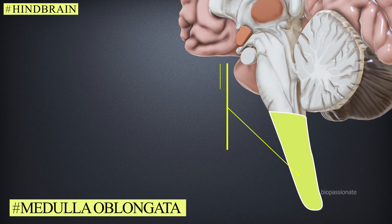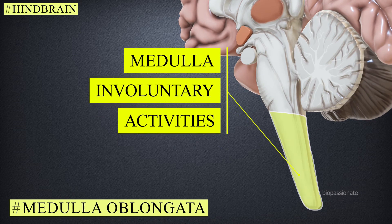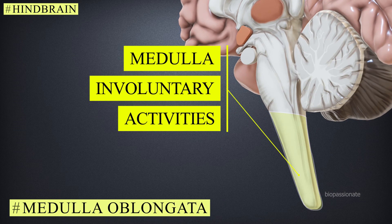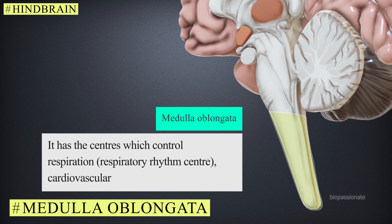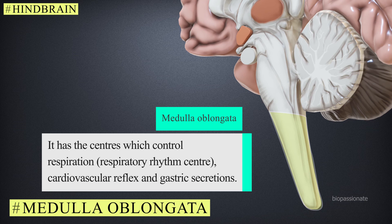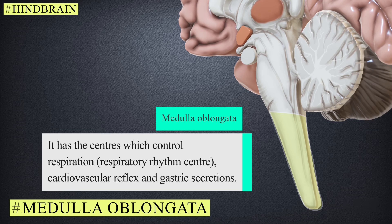The medulla oblongata controls most of the involuntary activities. It has centers which control respiration, called the respiratory rhythmic center, and also controls cardiovascular reflexes and gastric secretions.